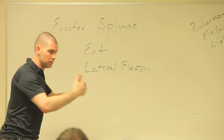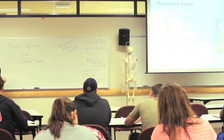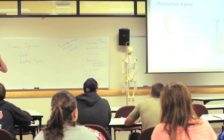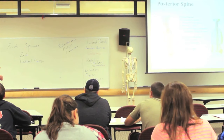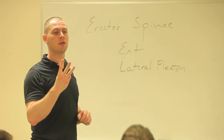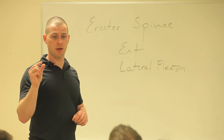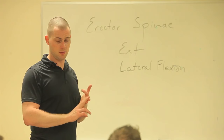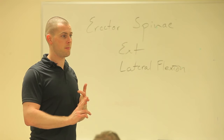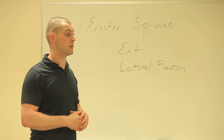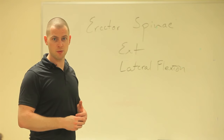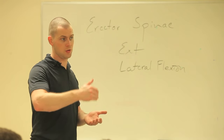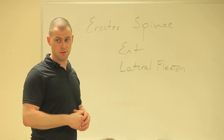Is there only one erector spinae muscle? No — there are actually three, and they all do slightly different things. You have your spinalis, your iliocostalis, and your longissimus. At this level we're okay calling it the erector spinae, but once you get into graduate school and start doing cadaver work, you're going to need to know all the different erector spinae muscles.